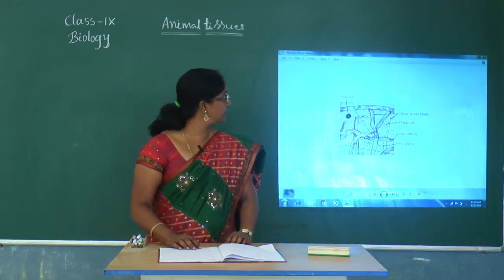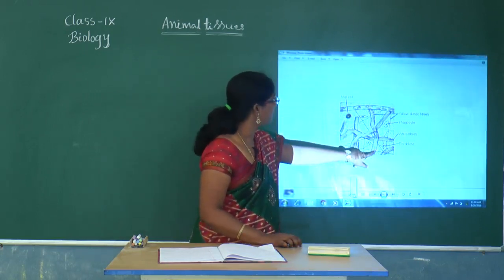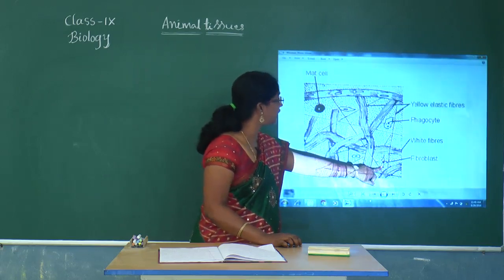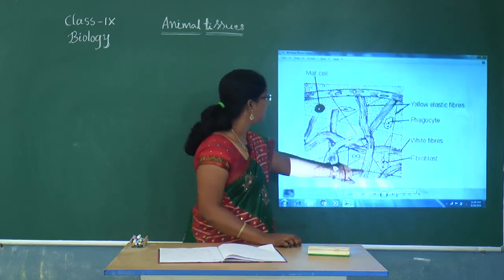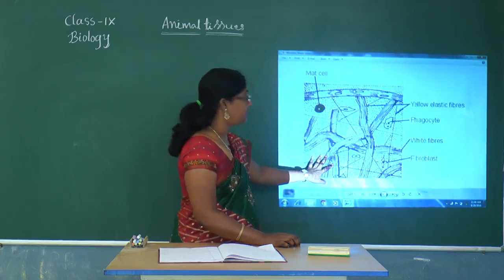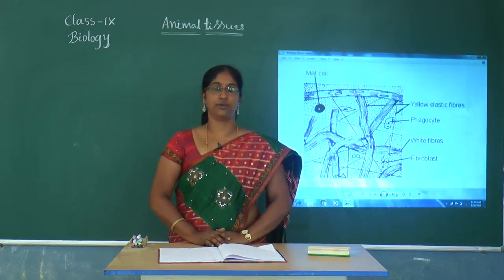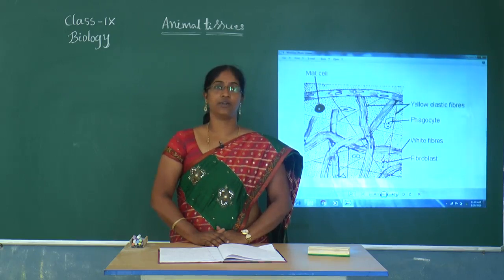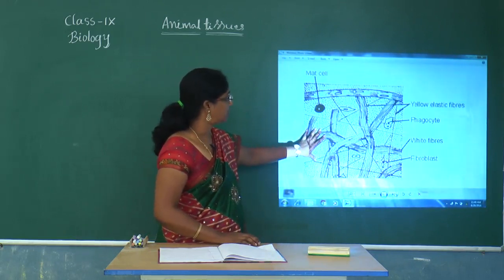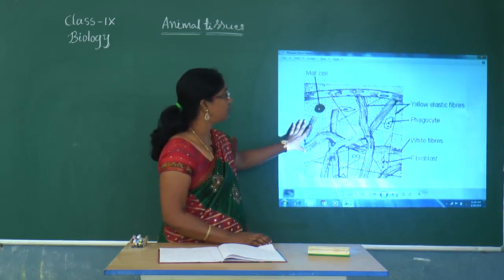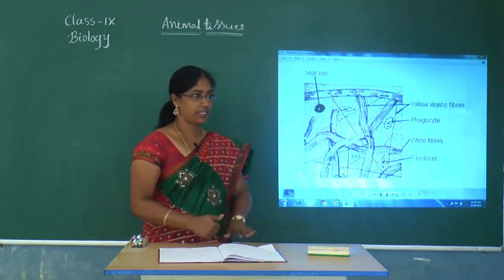Areolar tissue is located around blood vessels and nerves. You can find elastic fibers and fibroblasts here. Fibroblasts secrete fiber-like projections that hold internal organs in position. When you tilt or move, your internal organs are held in position because of areolar tissue. It is helpful in packaging, connecting, and joining organs and tissues, and also helps in repair.